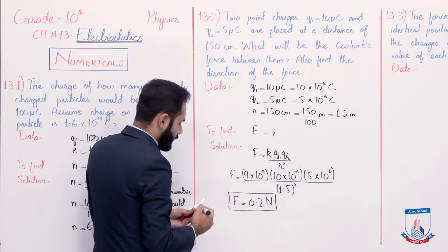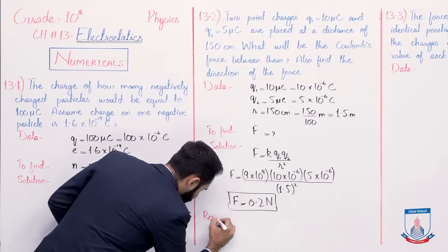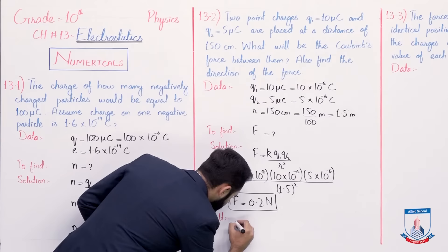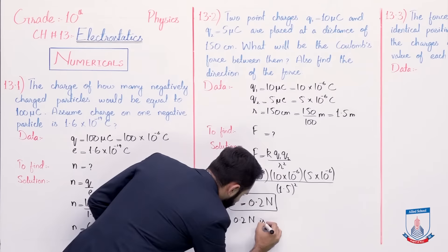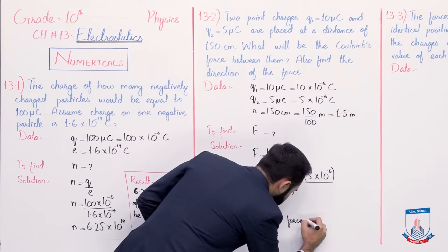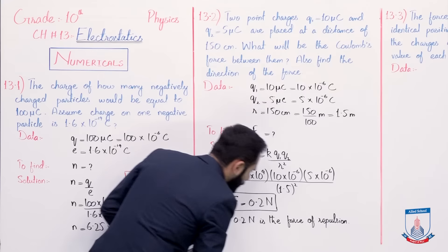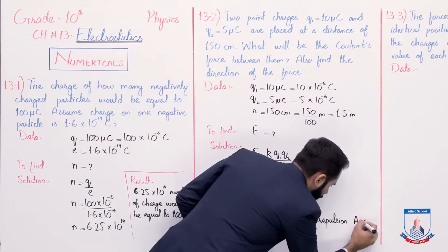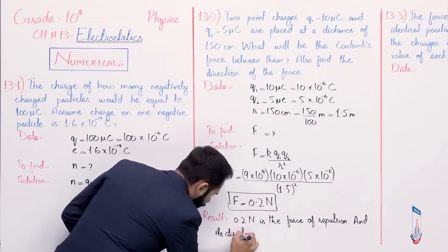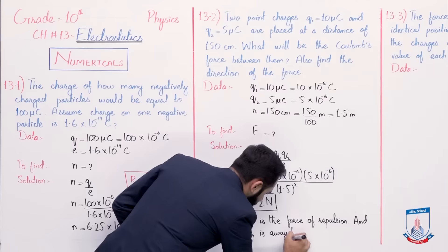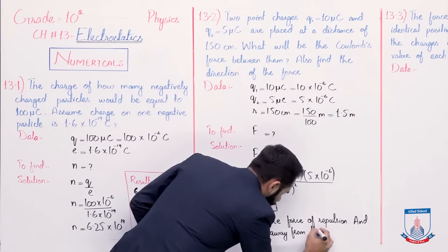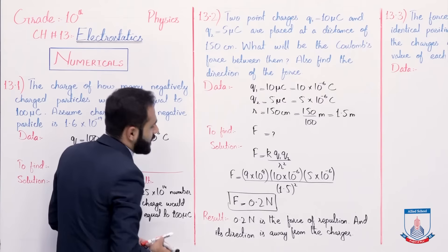Now write the result. 0.2 newton is the force of repulsion, and its direction is away from the charges. Also find the direction of the force.